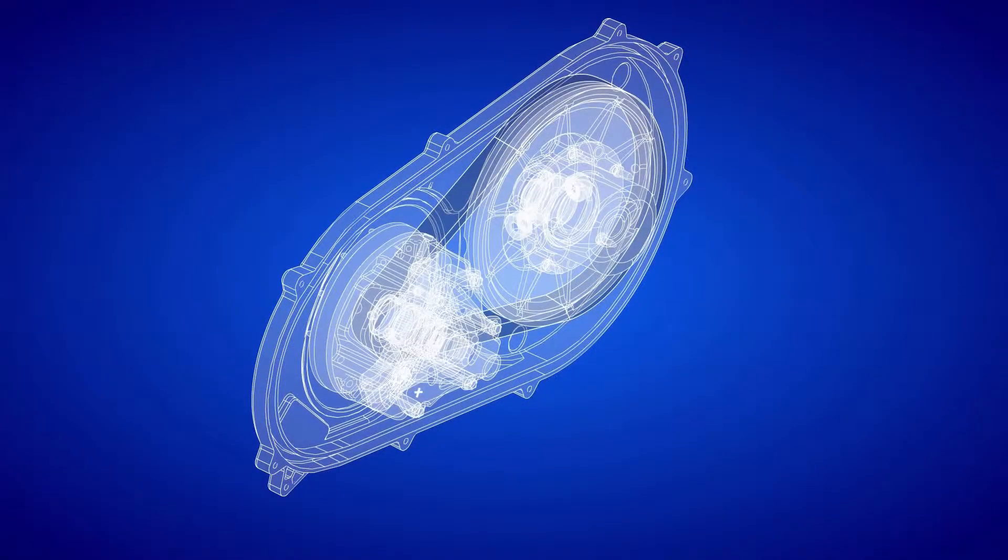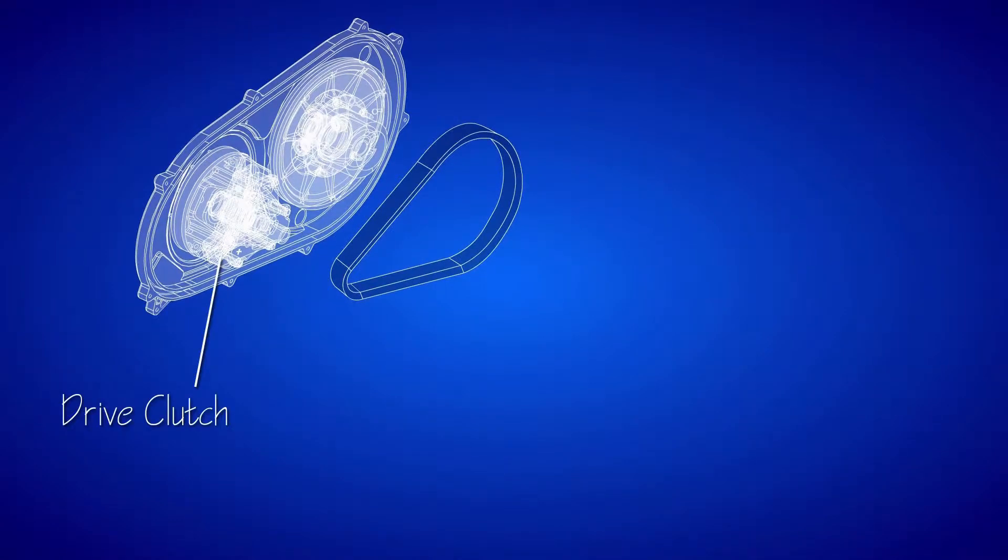The CVT system consists of three primary components: the drive clutch, which primarily senses engine RPM, the driven clutch, which primarily senses torque, and the drive belt.